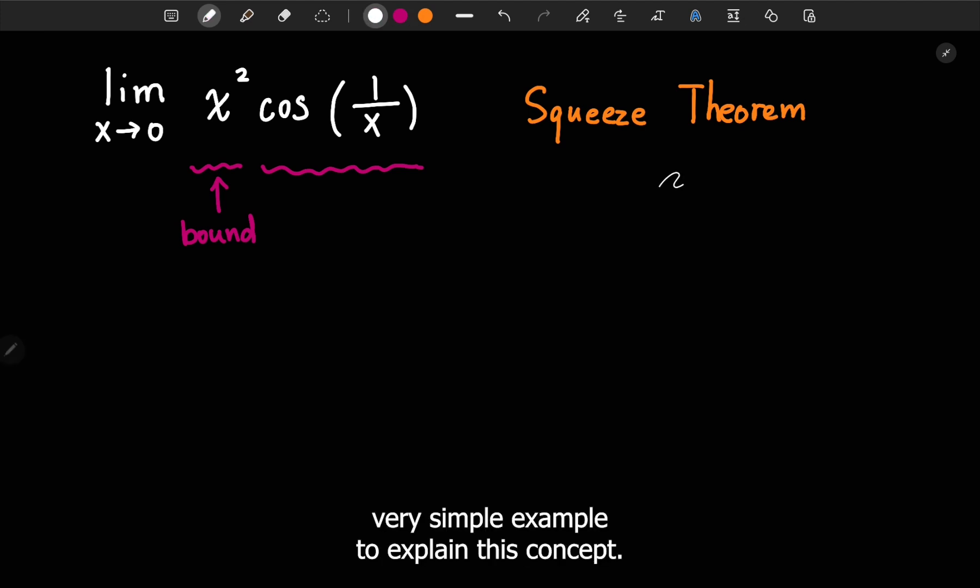So let me give a very simple example to explain this concept. If we have a variable y, and we know y is greater than or equal to 5, and also smaller than and equal to 5, what is our y going to be?